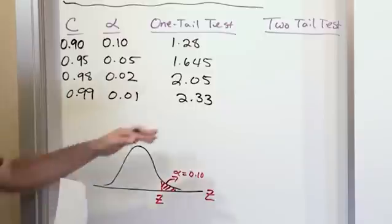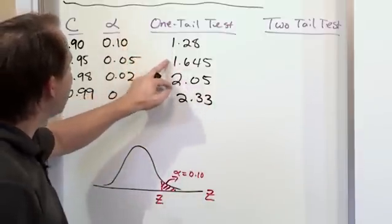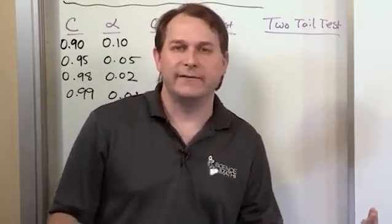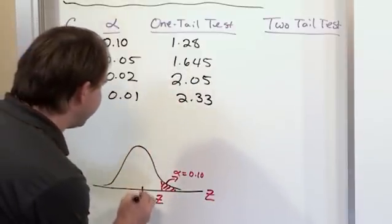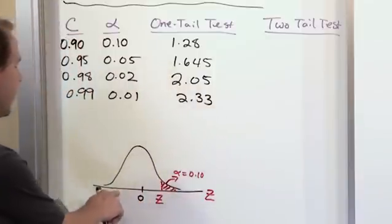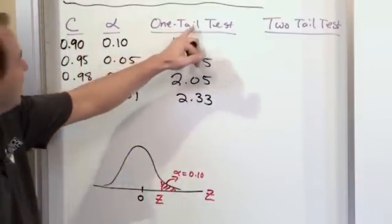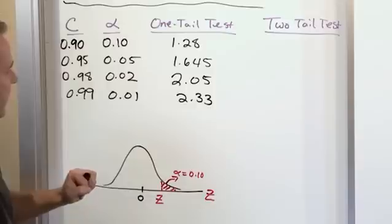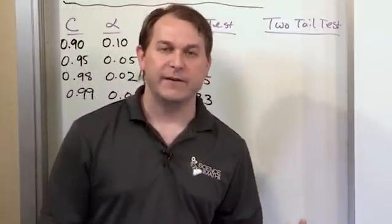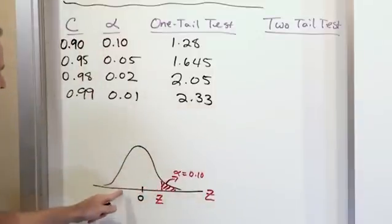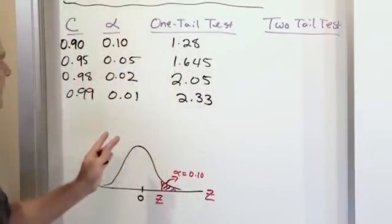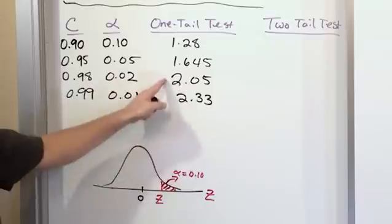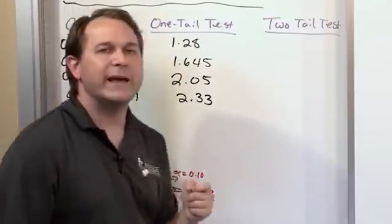These are for a one tail test, written as positive Z values, implying a right-hand test since the distribution is centered at 0. Positive values of Z are on the right; negative values are on the left. So for a right tail test at alpha 0.1, the boundary is Z = 1.28. But for a left tail test, the rejection region has a negative value of Z, so I put a negative sign in front of each of these values.